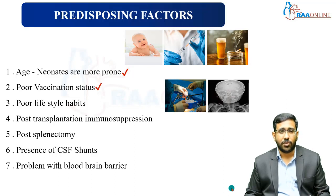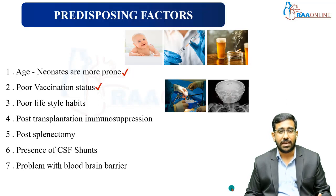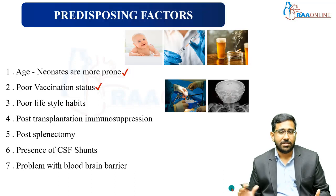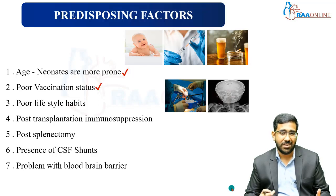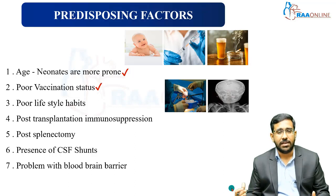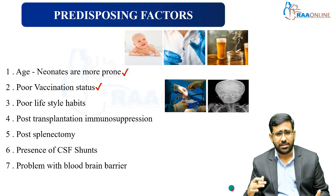The second predisposing factor is poor vaccination status. According to the immunization schedule, vaccination produces a certain amount of immunity, preventing infection. However, low socioeconomic status and other factors can contribute to poor vaccination coverage. Children who do not receive proper immunization will have less cell-mediated immunity from vaccination, making them more prone to infections like Streptococcus pneumoniae and Haemophilus influenzae — vaccine-preventable pathogens that cause pneumonia and meningitis.